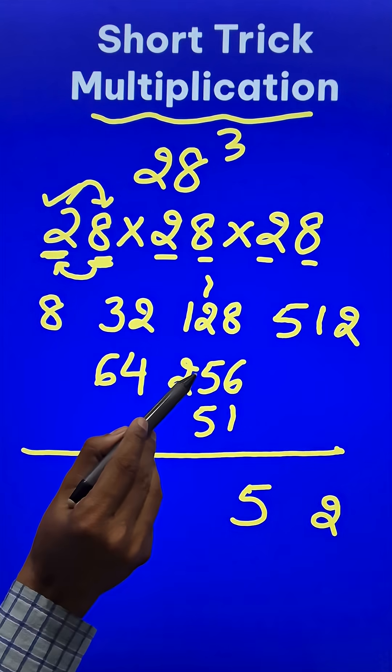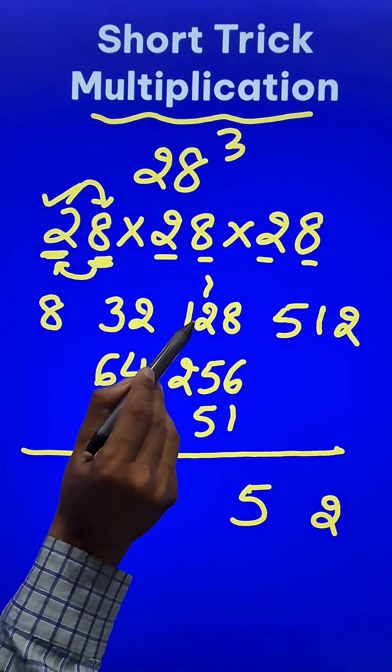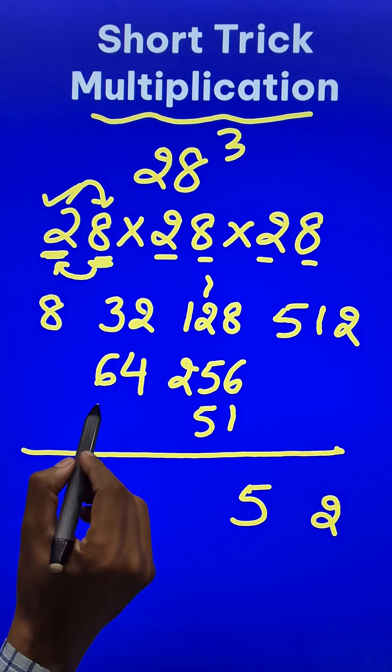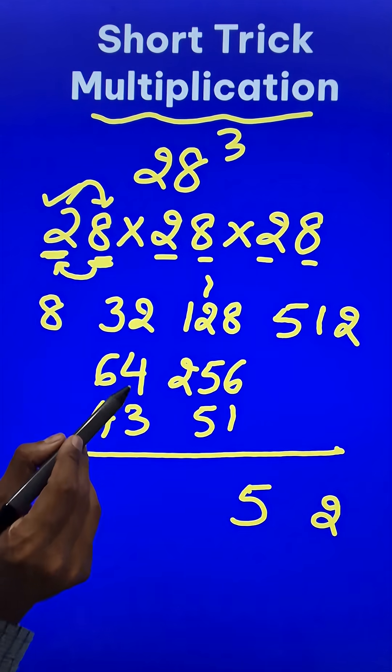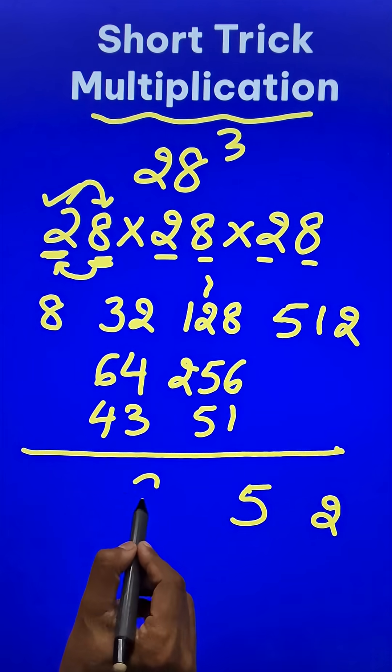Now the remaining part: 25 plus 5 is 30, 30 plus 12 is 42, plus 1 is 43. That gets carried forward here. Now the unit digit: 4 plus 3 is 7, plus 2 is 9. So 9 comes down.